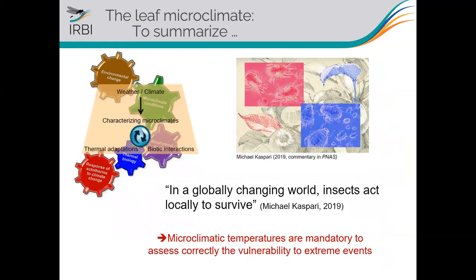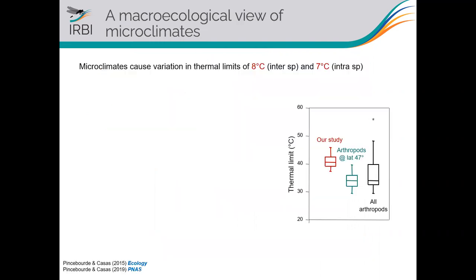To summarize, I like to quote what Michael Kaspari wrote about one of our papers: in a globally changing world, these insects act locally to survive. This brings home the idea that even when studying climate change at the global scale, we have to pay close attention to what is happening at very local and fine scales where our insects are living. Macroclimatic temperatures are mandatory if we want to correctly assess vulnerability to extreme events.